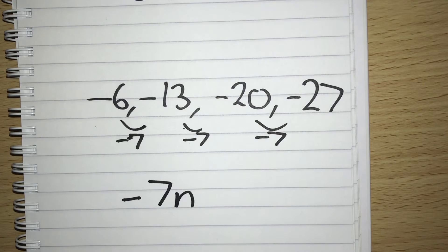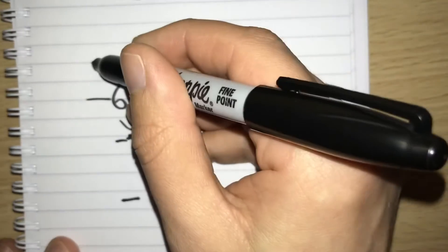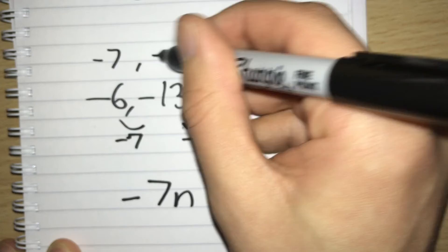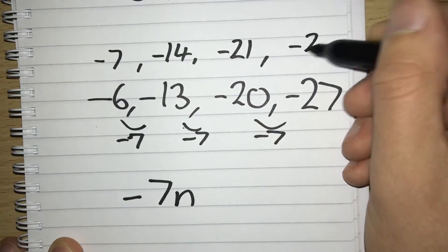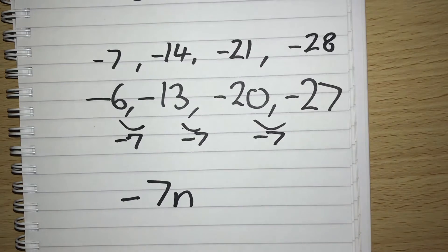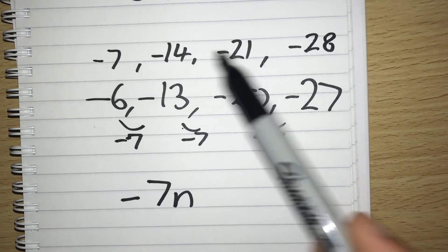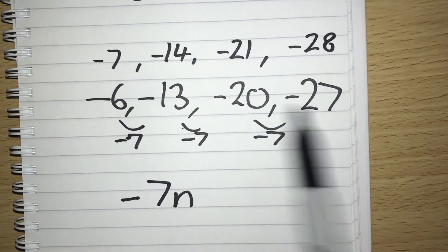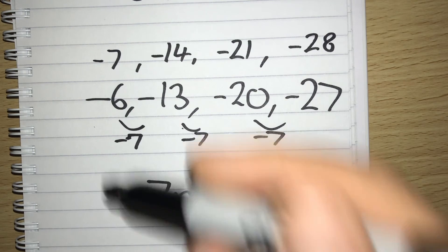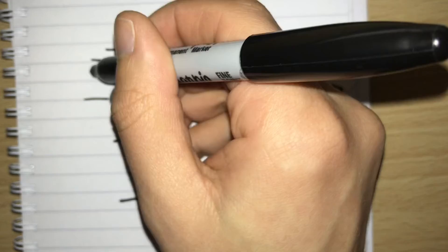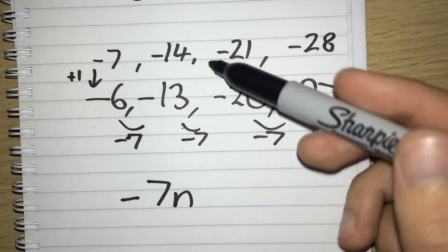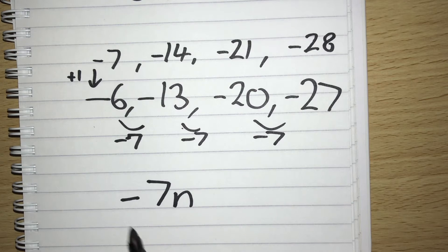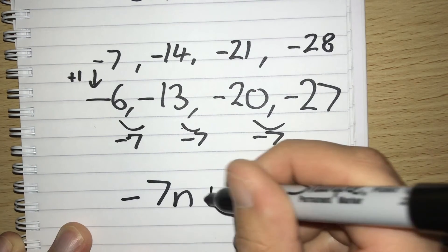Let's put our negative 7 times table. So negative 7, negative 14, negative 21, negative 28. What do we need to do to go from this negative 7 times table to the sequence that we're given? This time we need to add 1. So we go from minus 7 up to minus 6, adding 1. Minus 14 to minus 13, adding 1 and so on. So our nth term this time is going to be negative 7n plus 1.